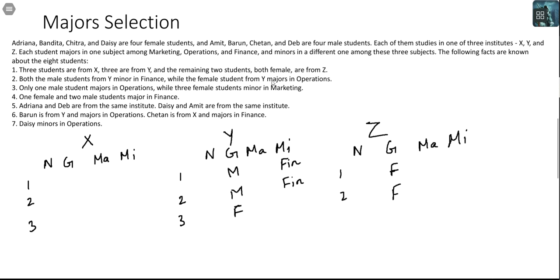The female student from Y majors in Operations. Only 1 male student majors in Operations, while 3 female students minor in Marketing. If there are 2 males in Y and no males in Z, there will be 2 males in X and another female in X. As of now I cannot record the third point, because I don't know who among the males is majoring in Operations, or which females are minoring in Marketing.